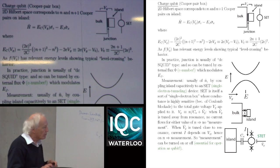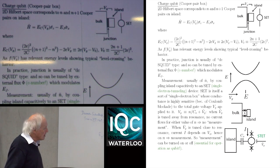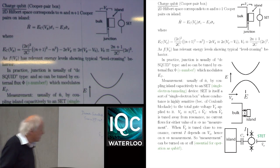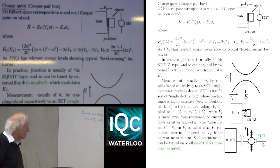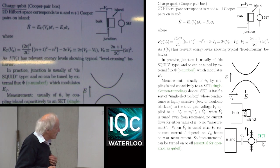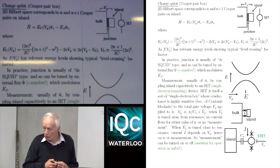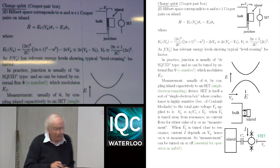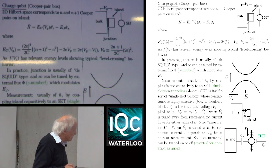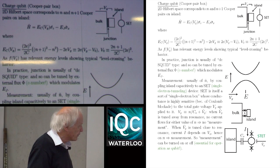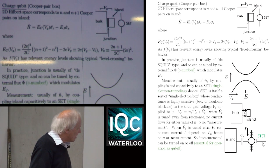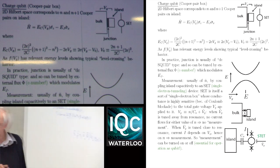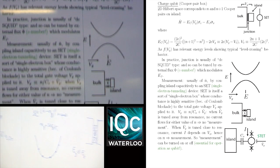Generally speaking, when you use this kind of configuration, you're interested in only the two lowest levels, and they form your two-dimensional Hilbert space — your qubit space.